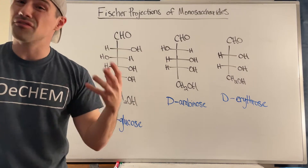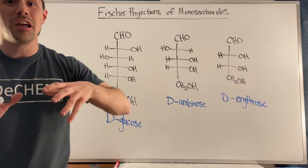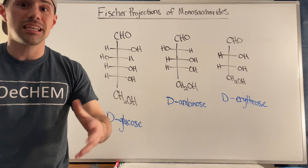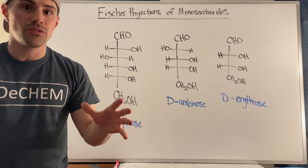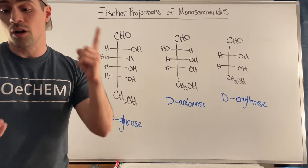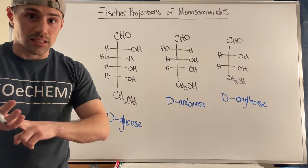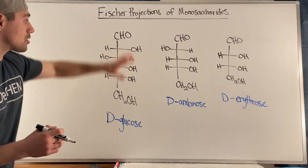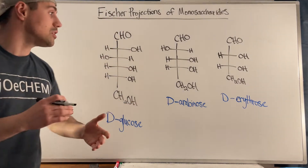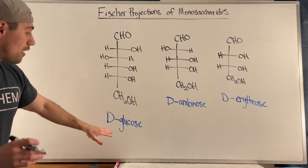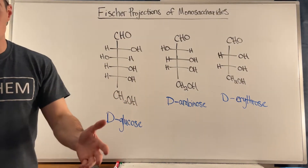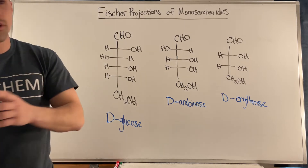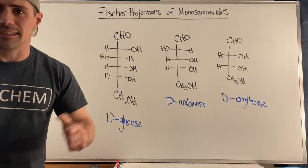There's a lot of terminology regarding this Fischer projection representation. I want to take this video to talk about things like: what is an aldose, what is a ketose, how can you talk about how many carbons are contained within a sugar, how can you identify whether you have a D or an L sugar, and if someone gave you the D sugar, how do you draw the L sugar?